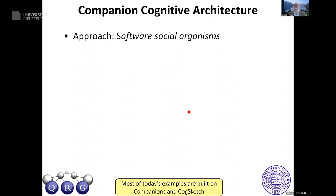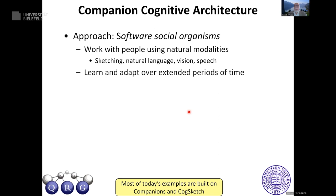We're thinking about how to build software social organisms — things that work with people using natural modalities: sketching, natural language, vision, and speech. They need to learn and adapt over extended periods of time. People don't learn in a factory and then never learn again — that's crazy. That also implies systems must maintain themselves. You don't want a human expert sitting with every machine debugging its internal structures. Self-maintenance is a major challenge; the US AI roadmap has a whole section on milestones for exactly this.